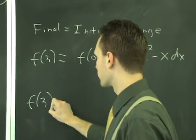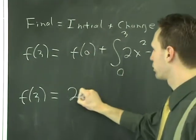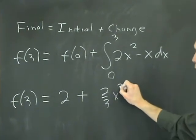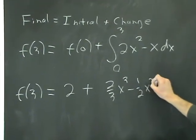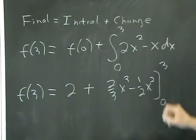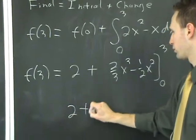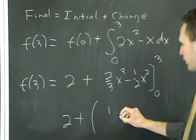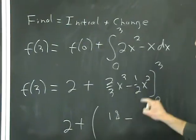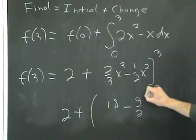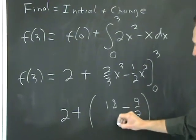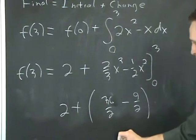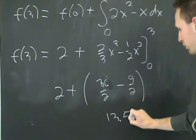You get f of 3, which we don't know, is going to equal f of 0, which is 2, plus, then you have to integrate this, and we get 2 thirds x cubed minus 1 half x squared, and you do that from 0 to 3. When you plug in 3, you get 2 plus, what do you get? 3 cubed is 27, divided by 3 is 9, times 2 is 18 minus 9 halves, and 18 minus 9 halves, well, 18 is like 36 halves, minus 9 halves is 27 halves, so this is 13.5.